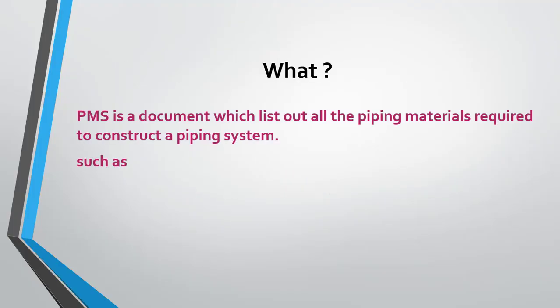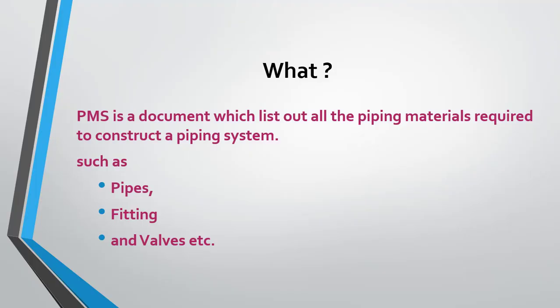We must understand what PMS is all about. PMS is a document which lists out all the piping materials required to construct a piping system. This document lists out piping materials such as pipes, fittings, valves, and various other items which are required to be used during the construction stage. The significant factor of this document is that the materials listed are validated and approved for use by technical authorities.